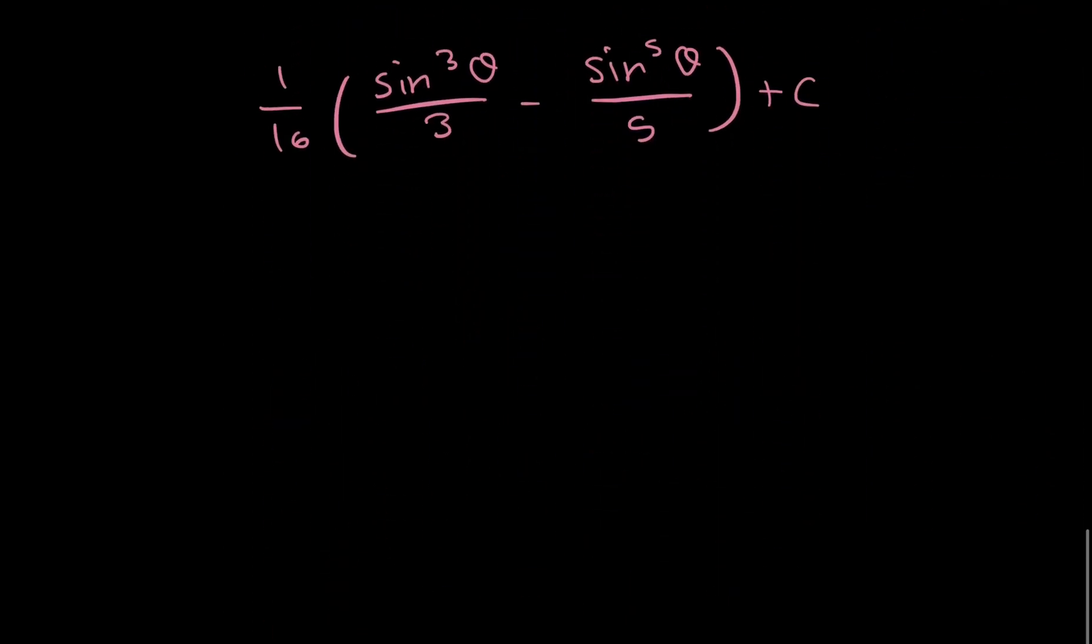So I said that x is equal to 2 tan theta. So I'm going to write that down here again. So x is equal to 2 tan theta. Well, let's isolate tan. I know that tan theta is equal to x over 2.